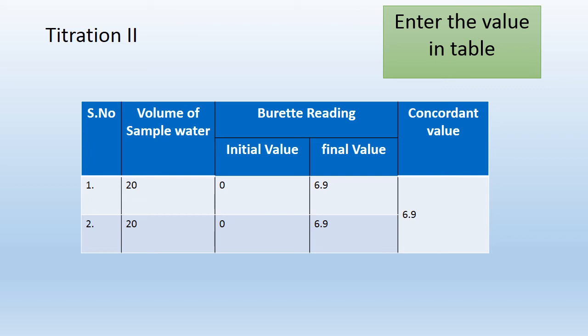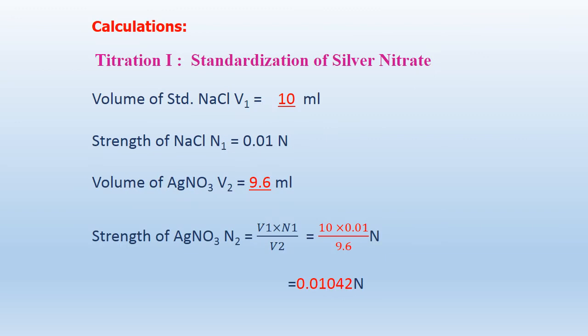Enter the value as shown in the tabular column. Let us see the calculation. Titration 1: standardization of silver nitrate solution. Volume of standard NaCl solution taken is 10 ml, and the strength of NaCl given in the question is 0.01 Normal.